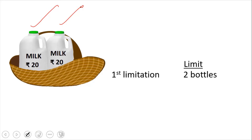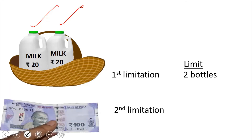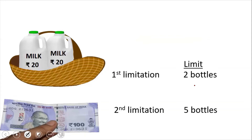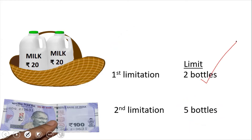Now coming to your second limitation — the cash that you have with you. You have just 100 rupees with you. Each bottle of milk is priced at 20 rupees, so you could buy five bottles with your 100 rupee note. But you cannot buy five bottles because the capacity of your basket is limited to two bottles. So you will be buying just two bottles of milk because of your first limitation.